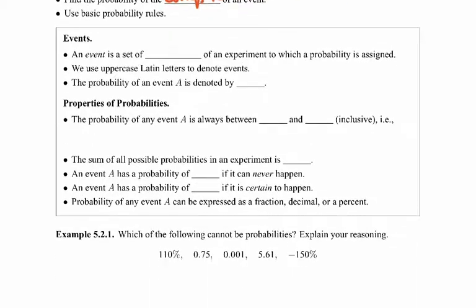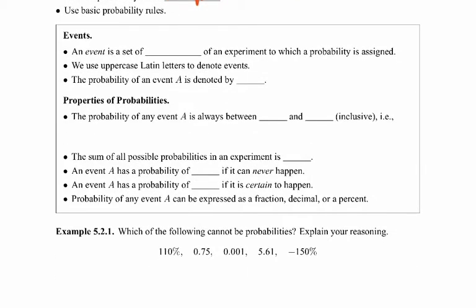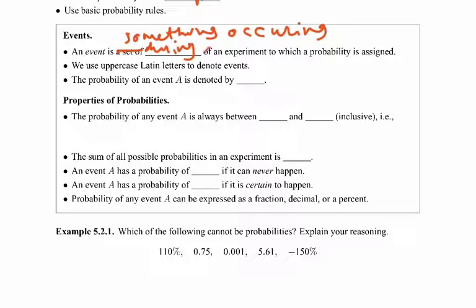So what do we mean by an event? An event is something occurring during an experiment to which probability is assigned. So an event could be anything — the event that it's going to rain, the event that a coin will land on heads, the event that we'll make a particular sale in some sort of business setting. Anything that could happen during an experiment that we assign a probability to is considered an event.